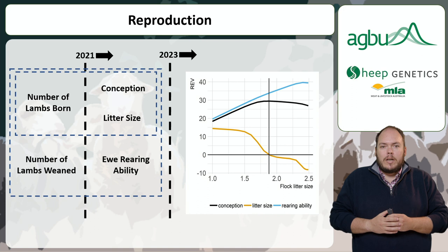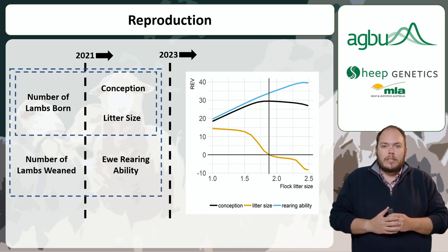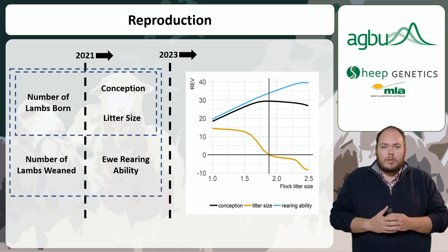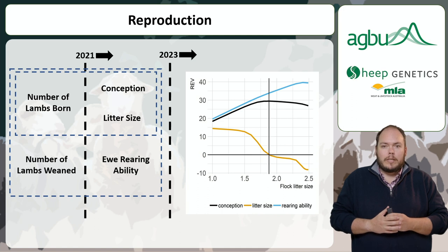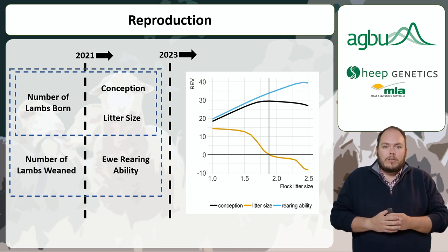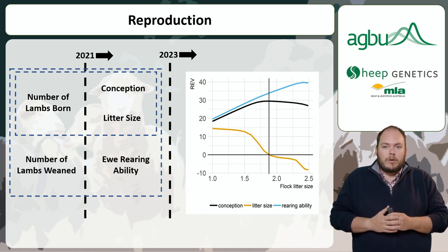Consequently, as shown in this figure, the value of increasing litter size declines in flocks with higher reproduction, and it becomes more important to reduce the percentage of drier ewes and make sure that lambs on the ground survive, rather than to have more lambs per ewe. Transitioning to use the component traits within the Sheep Object modelling allows us to more accurately account for the impact of changes in the components of reproduction and their impact on flock management costs, flock structure and culling decisions, and in turn the impact of these changes on flock productivity.